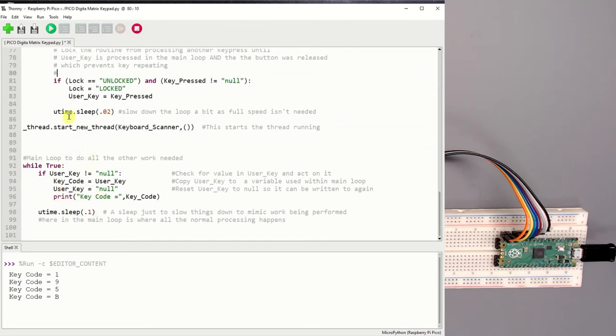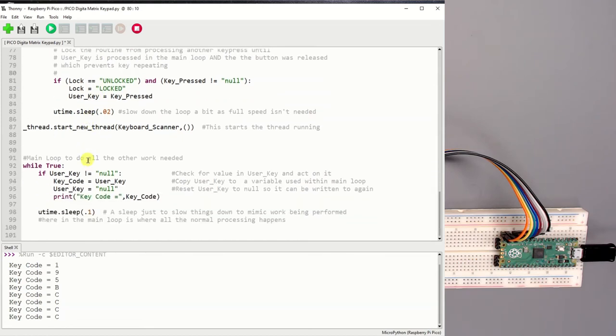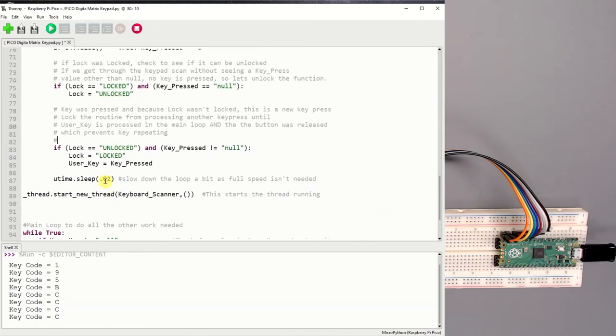Now at this point in the main program, it could see if user key is not equal to null because now it's equal to key pressed. We will then copy into key code a local variable in our main loop. We'll copy that value into there. We will set user key back to null and then we'll print out down below here as I'll show right here and I'm pressing C. That is the behavior up in here what this part does.